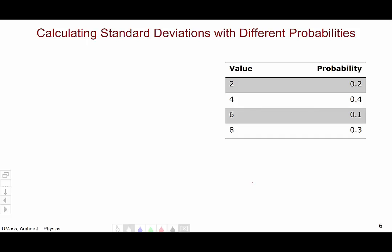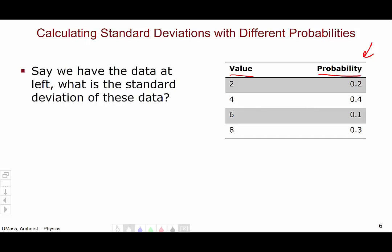Now let's move on to thinking about calculating standard deviations of events with different probabilities. Here in this table, I have given you a list of values and their probabilities. What is the standard deviation of these data?